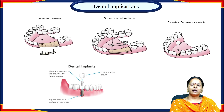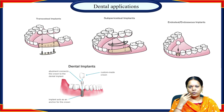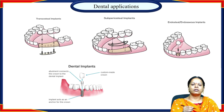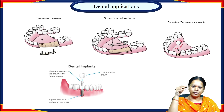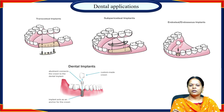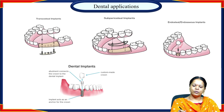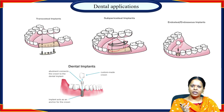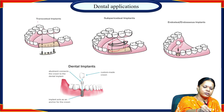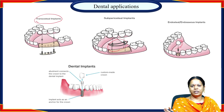Coming to dental applications: we classify them as endosseous, transosseous, and subperiosteal. Endosseous refers to that which is seen from the outer end — the artificial tooth. Subperiosteal refers to what goes into the gums, providing a firm base for the artificial tooth, including ridges, abutments, and base material. Transosseous provides support from the deeper roots. These are the three different types of dental applications.